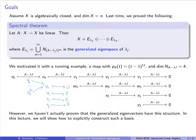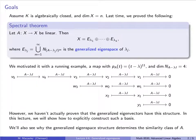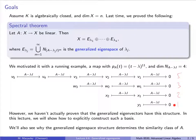It turns out this alternative structure is not going to be the case, but we have not yet proven it, and that's what we will do in this lecture. We will explicitly construct a basis that looks like the chain structure. We will also see why the generalized eigenspace structure determines the similarity class of A. Two linear maps are similar if and only if, for all eigenvalues, the generalized eigenvector chains have the same lengths up to reordering.